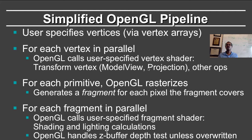The vertex shader transforms the vertex by applying the model view or the projection matrix as well as other operations. Thereafter, for each primitive, OpenGL rasterizes, determines which pixels on the screen it corresponds to, and generates a fragment for each pixel that the primitive covers. Then, again in parallel for each of the fragments, you apply the fragment shader. This will typically do shading and lighting calculations, and OpenGL also handles the zbuffer depth test by default, although it can be overwritten by the user.